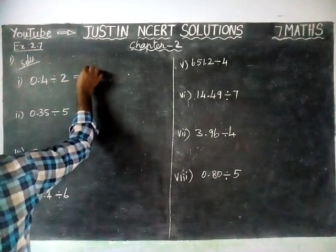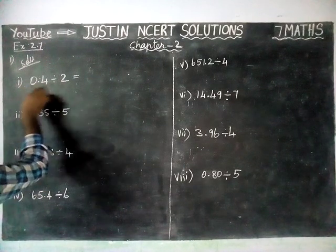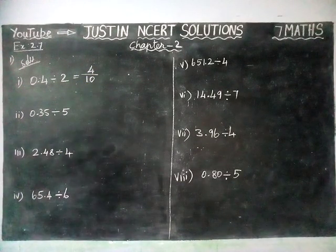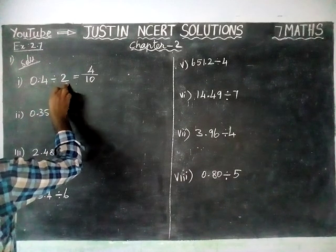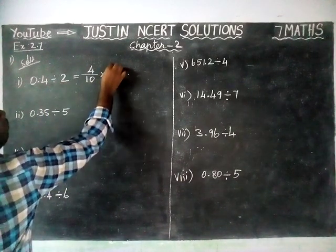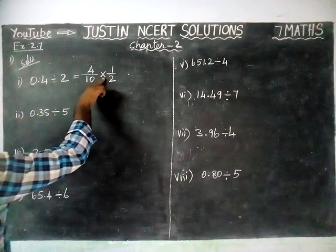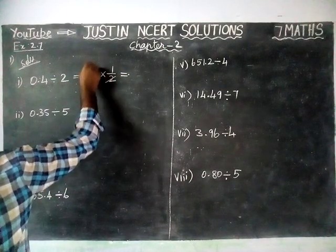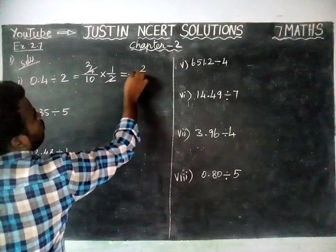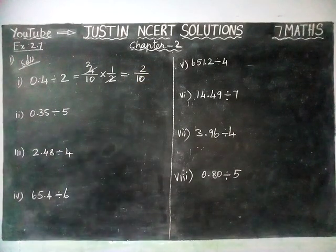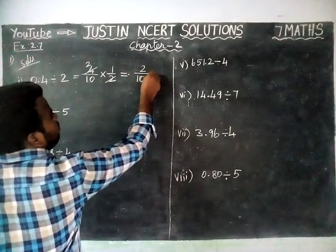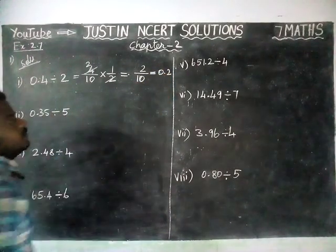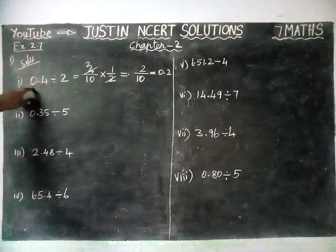The first method: 0.4 divided by 2. This 0.4 is written as the fraction 4 by 10. The division is converted into multiplication and 2 is taken as a reciprocal — multiply 4/10 by 1/2. That gives 2 by 10. When dividing by 10, according to the number of zeros we place the decimal point. Since there is one zero, the answer is 0.2. This is method 1.